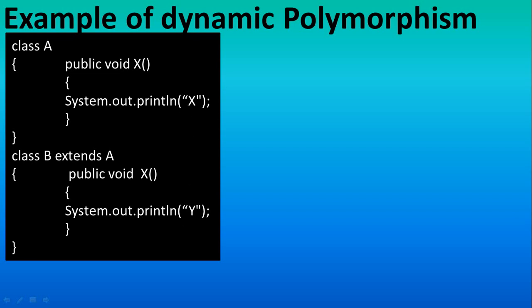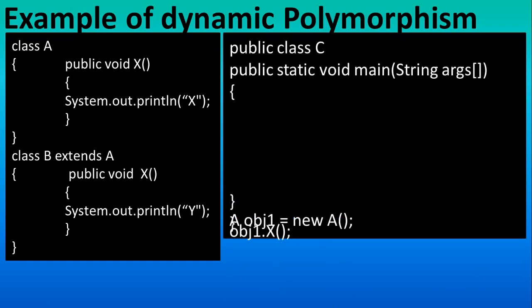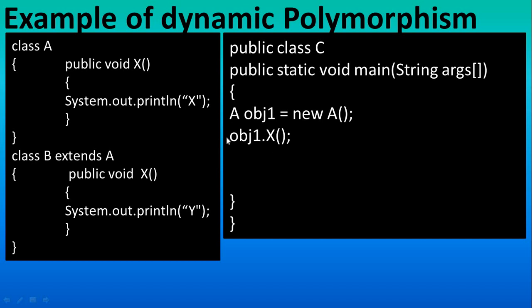For running this, take one class with main method and take one object. By using the statement obj1.X it will run this method only. Next one is obj2, which is the object of B. We are using obj2.X so it will run this method.